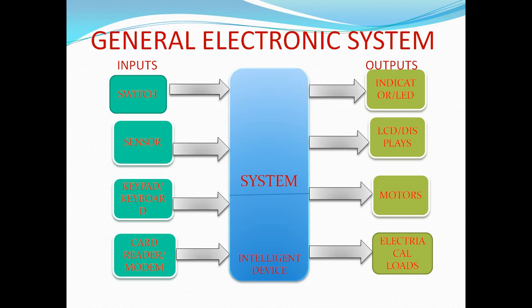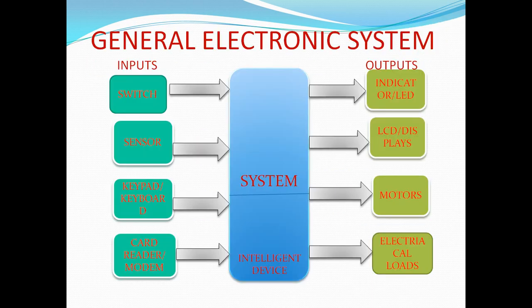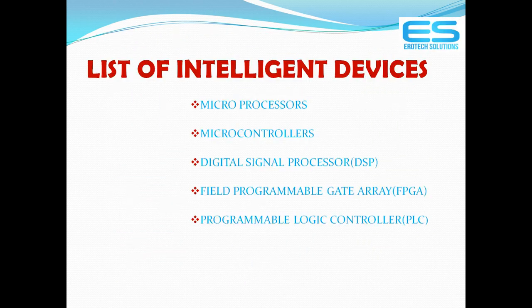That brain may be a processor, controller, DSP processor, FPGA, or PLC. As electronics students, you may know these from microprocessors, microcontrollers, digital signal processors, field programmable gate arrays, and programmable logic controllers — five programmable devices. The entire controlling, monitoring, and processing of inputs and giving signals to outputs is done through this intelligent device.